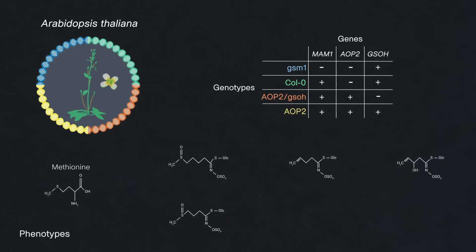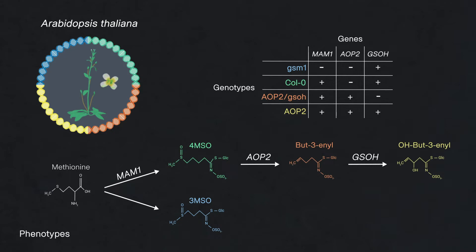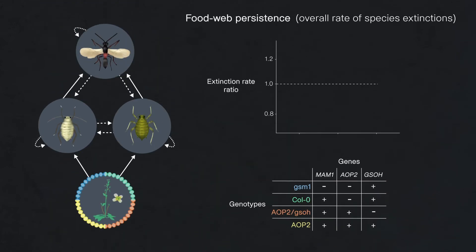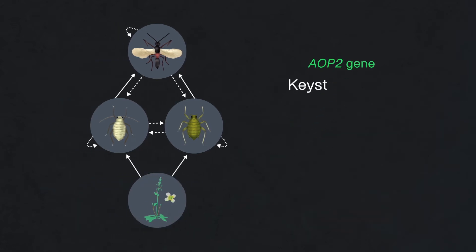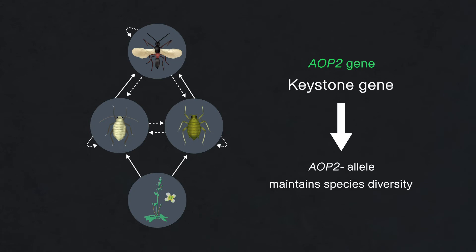The chemical phenotype of each Arabidopsis genotype depends on which genes have null and functional alleles. We first tested for genetic effects on food web persistence and found that plants with a null AOP2 allele reduced the extinction rate by 29% compared to those with the functional allele. Our results indicate that AOP2 functions as a keystone gene in this food web, with allelic differences at AOP2 having a disproportionate effect on extinction rate.